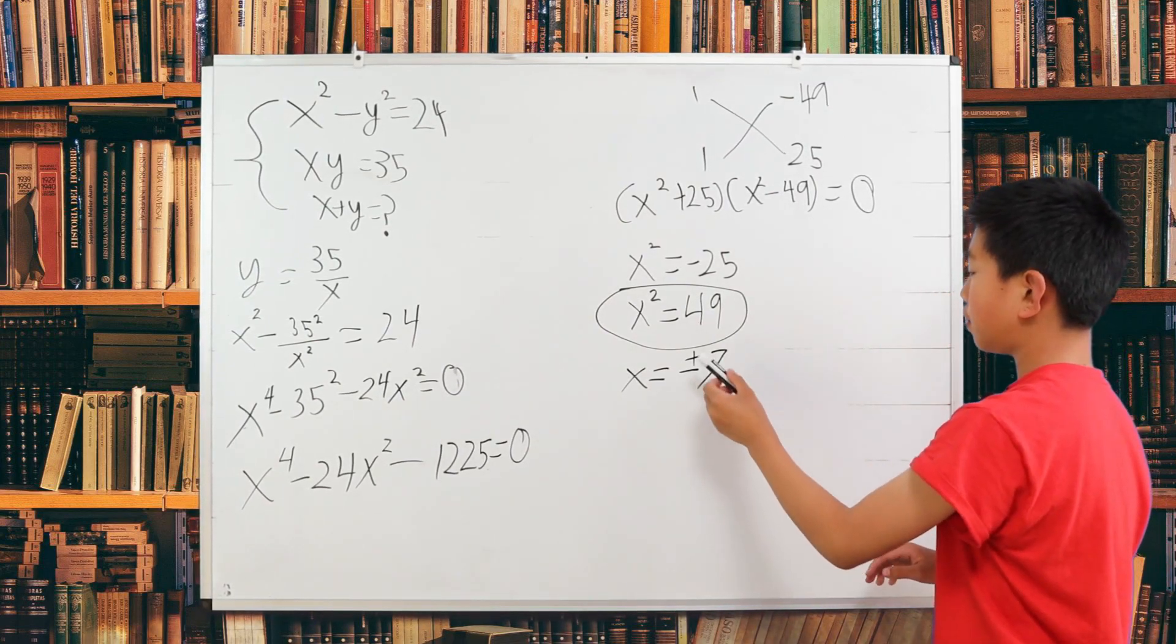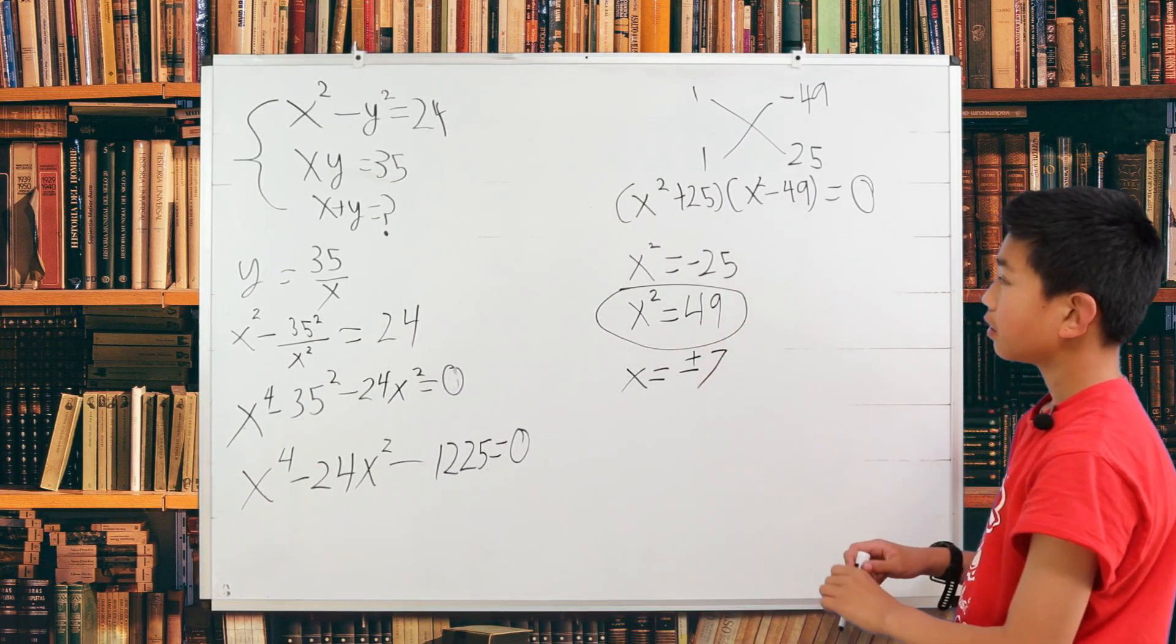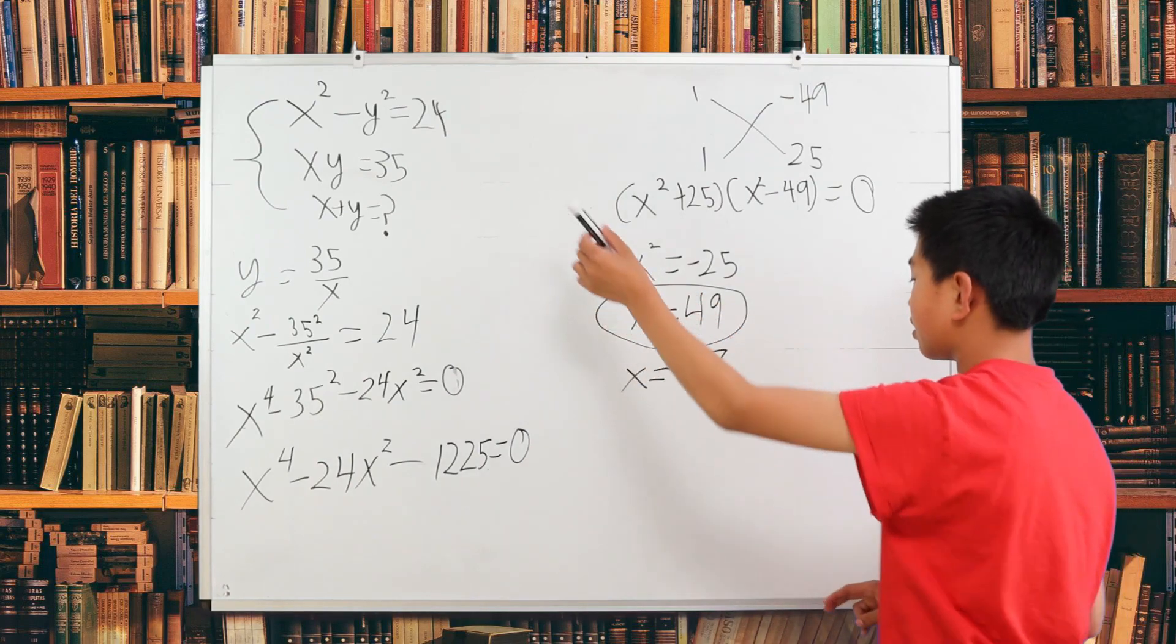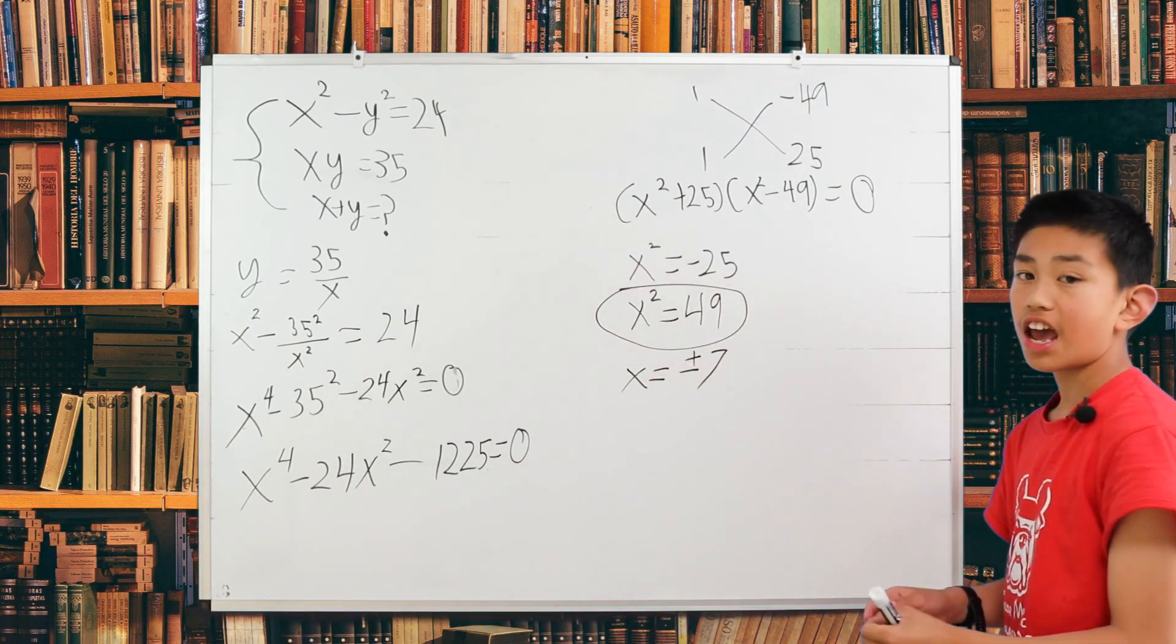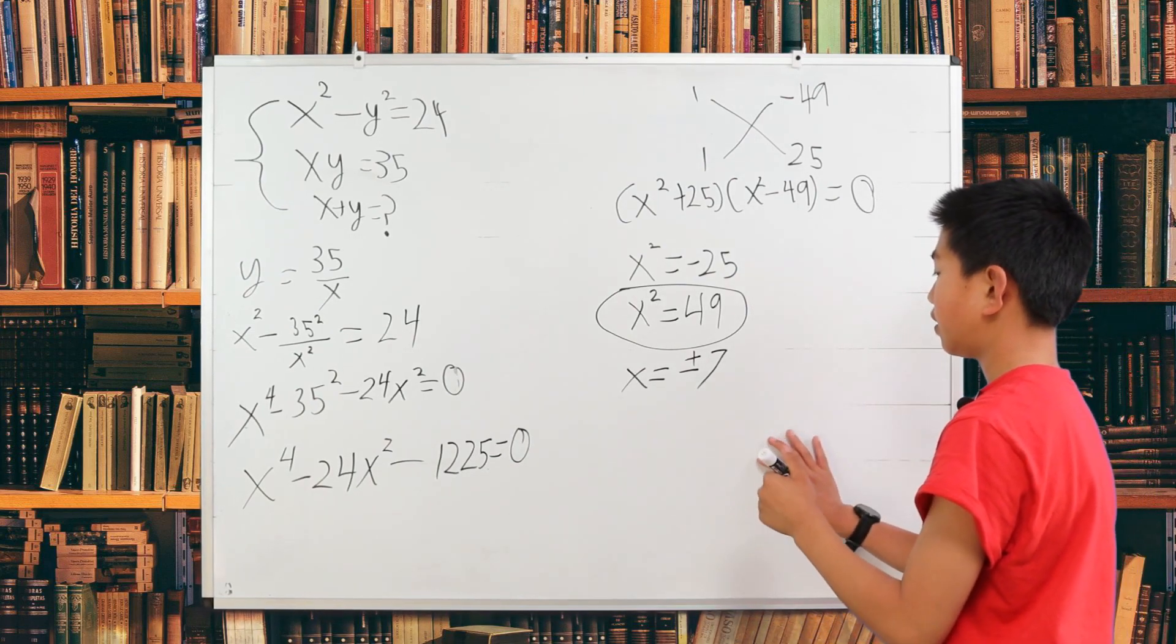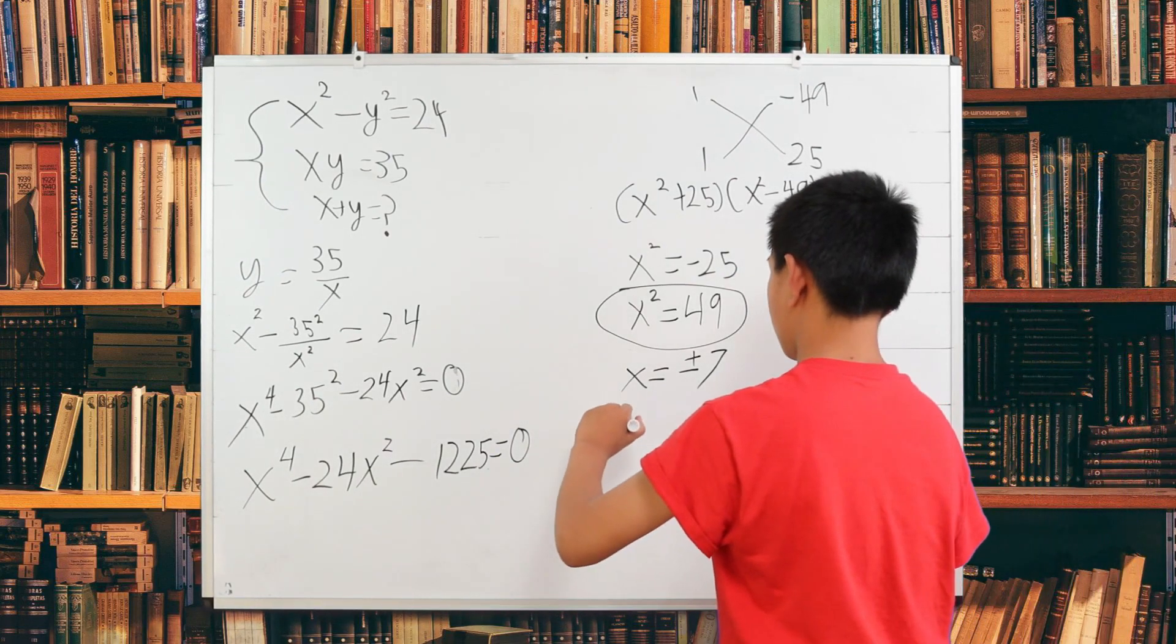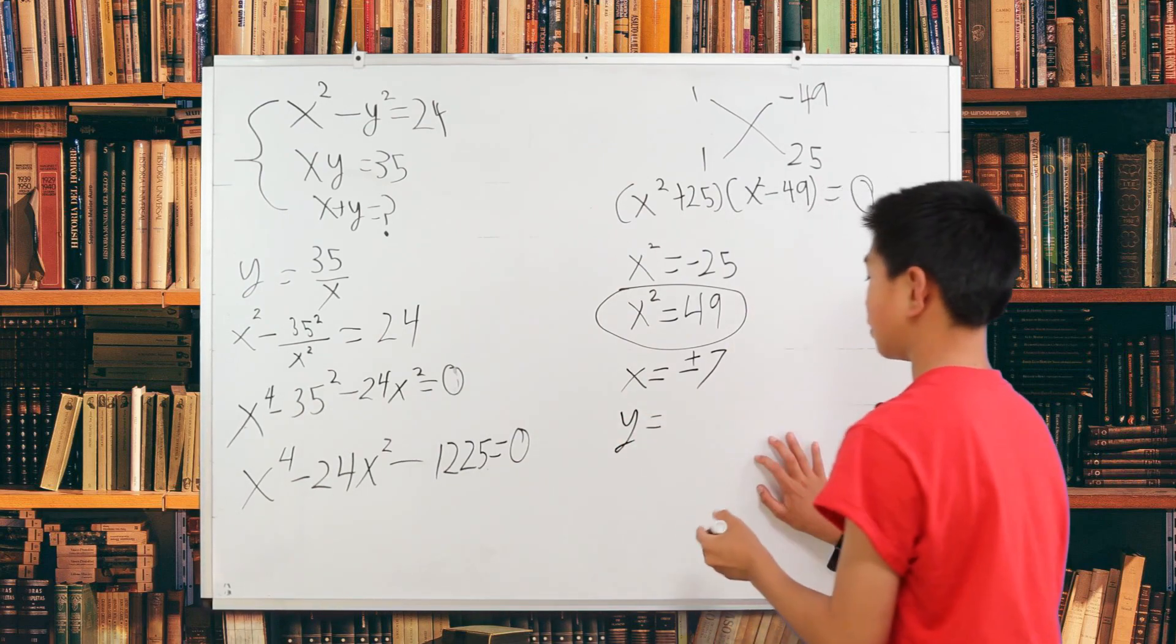Now we know that this is positive or negative 7. We are given that x times y is 35. So 7 times y is 35. That y is 5, but it's also positive or negative 5.